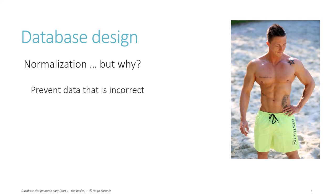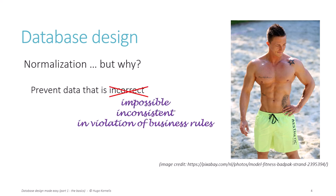Now, how would any database or application ever prevent me from uploading that picture and claiming it is me? Of course I need to be consistent about it — I need to lie thoroughly. If I enter my real birth date or my real hobbies, it's immediately clear that this cannot be me. But if I am consistent, the incorrect data cannot be prevented, as long as I keep my webcam off. However, what a database can do is prevent data that is impossible, inconsistent, or in violation of business rules.